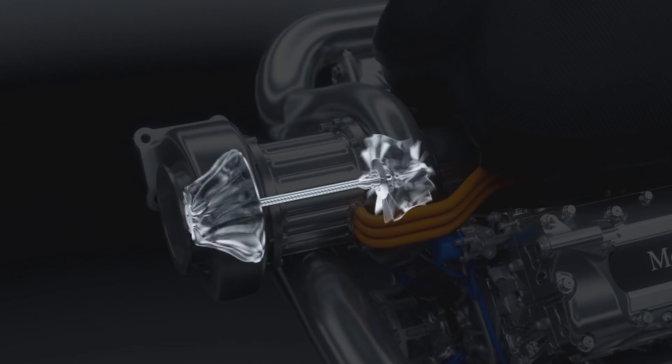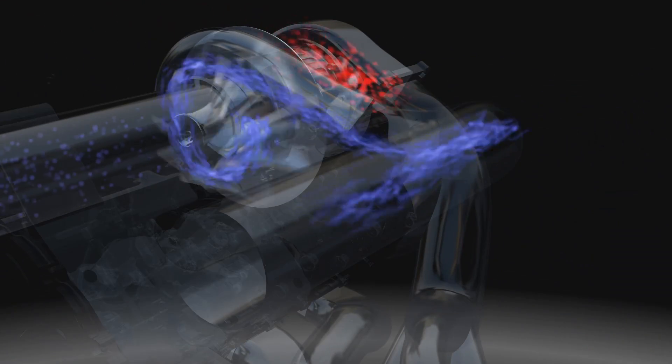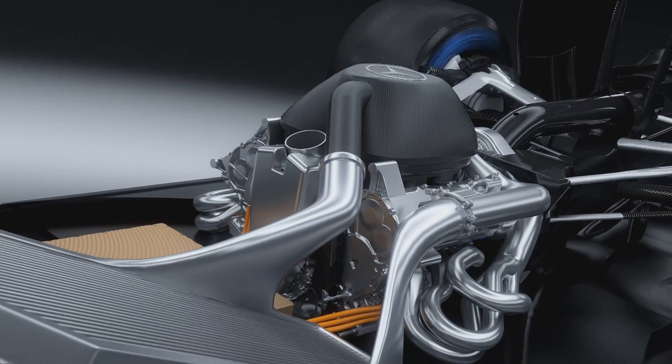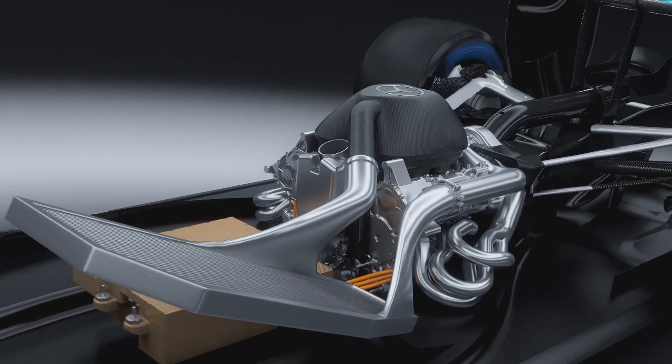This turbocharger uses the otherwise wasted exhaust gas to push more fresh air into the combustion chamber for enhanced fuel efficiency. Before reaching the air intake, the compressed air passes through an intercooler to increase its power density.